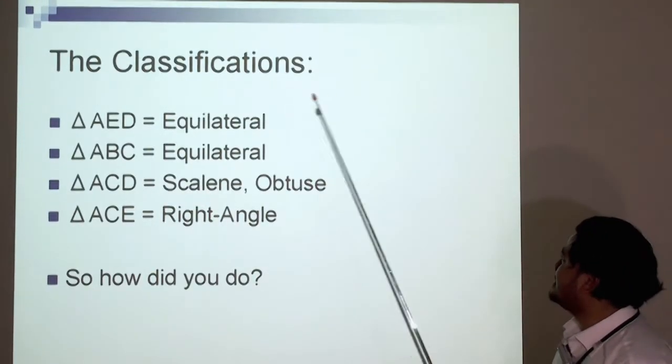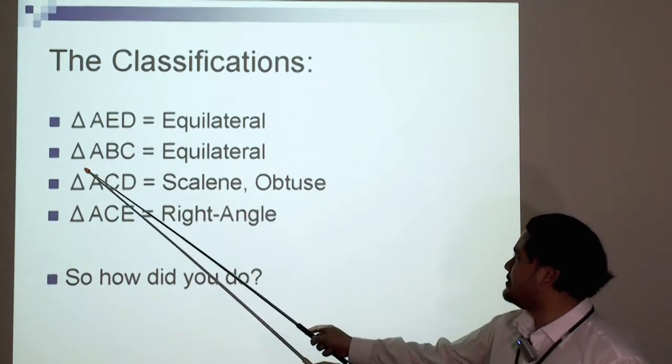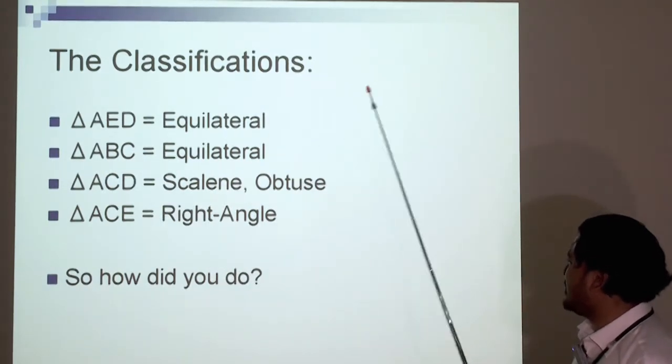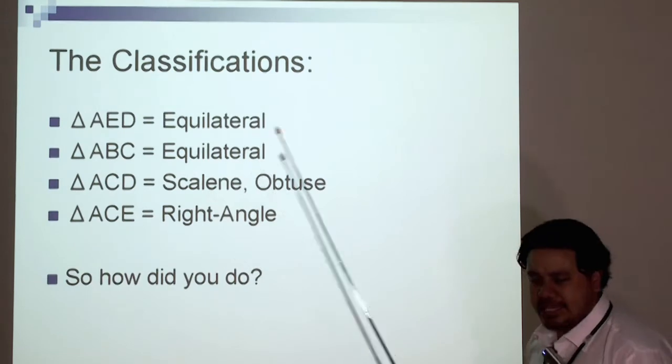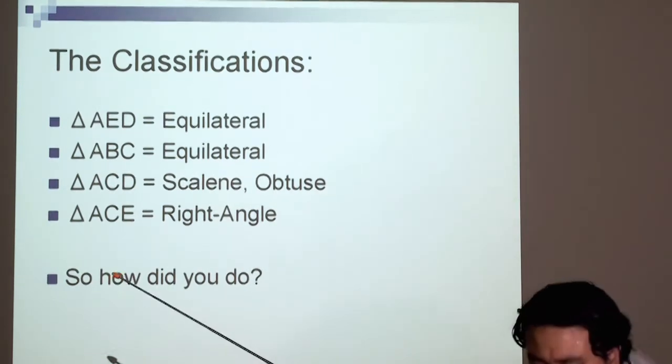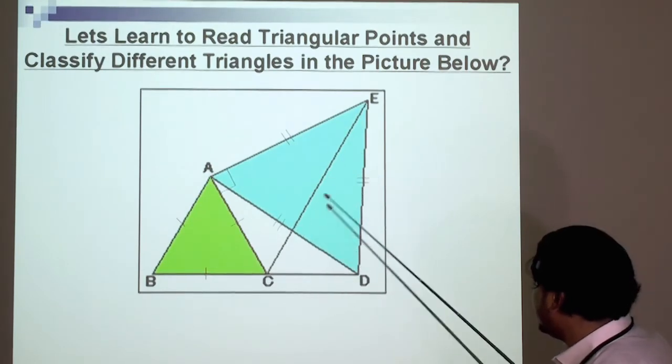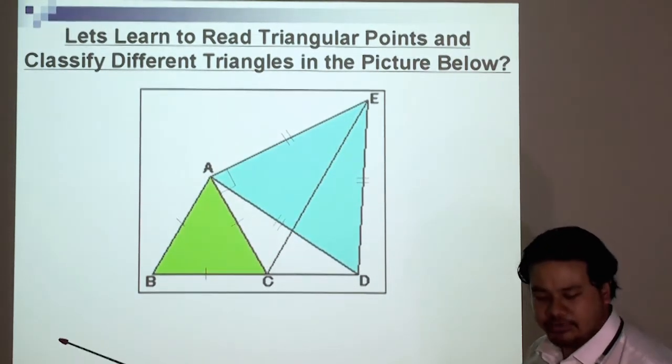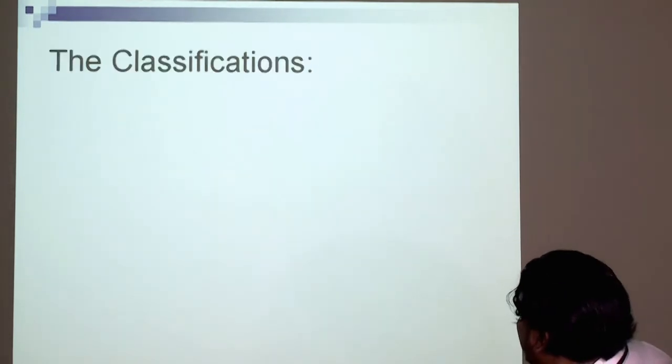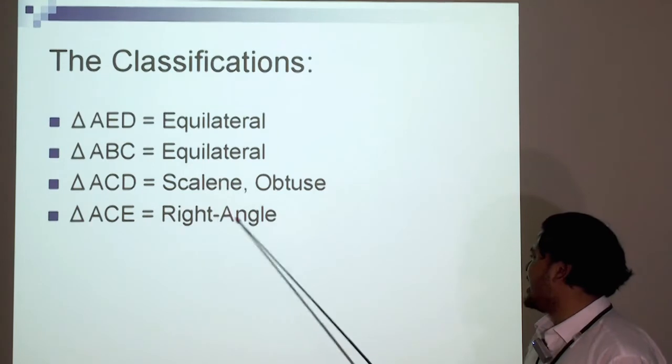So let's check our answers here. Triangle A, E, D, equilateral triangle. Triangle A, B, C was also equilateral. Triangle A, C, D, scalene triangle. And as you'll notice here, it's also an obtuse angle. Let's just go back a bit. So you can see here that it has one angle here, greater than 90 degrees. And our last triangle, triangle A, C, E, it's a right angle triangle.